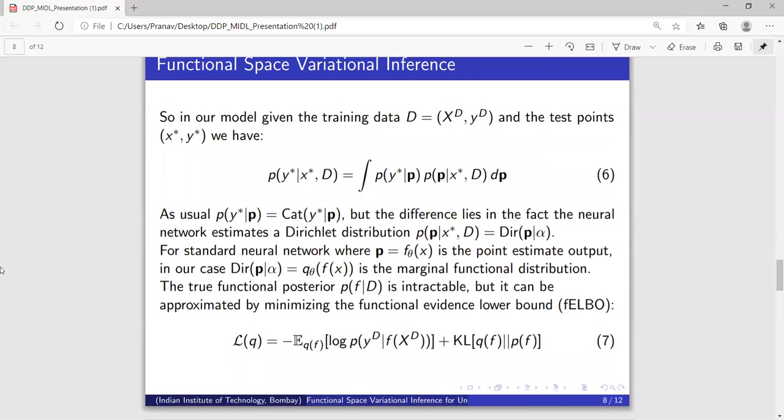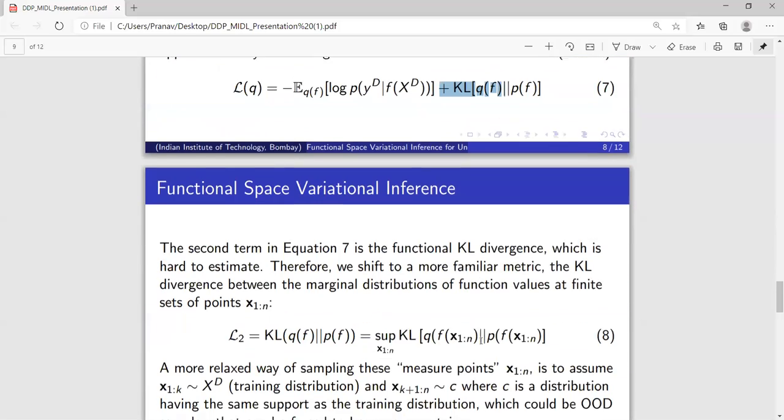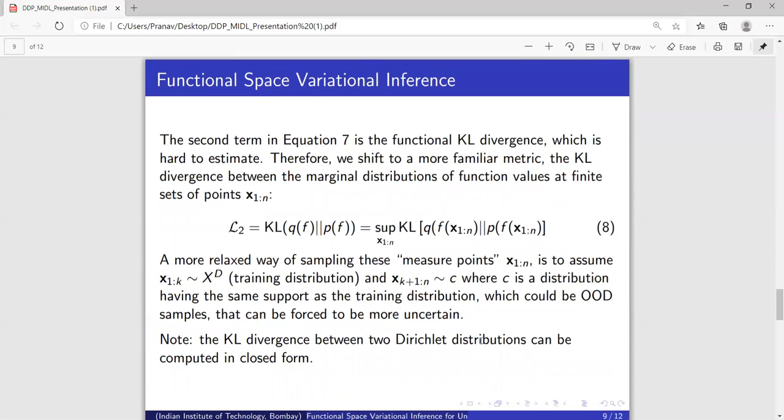So how do we go about training this? We have to minimize the functional ELBO rather than the standard ELBO. The only problem in doing so is the second term here. So to do that, we have to rely on a trick by sampling some so-called measure points and minimizing the marginal distribution of functions at only these finite set of points.